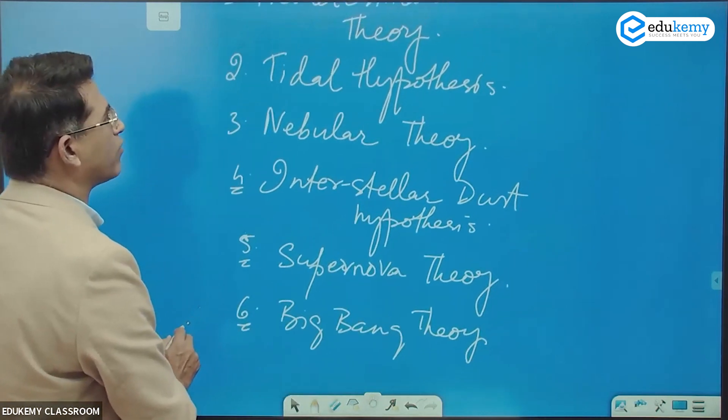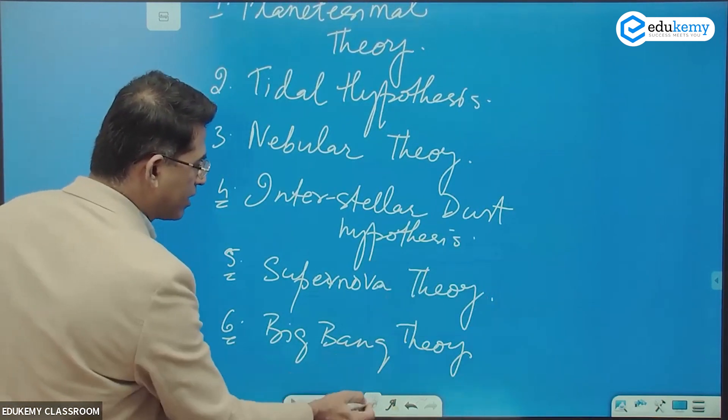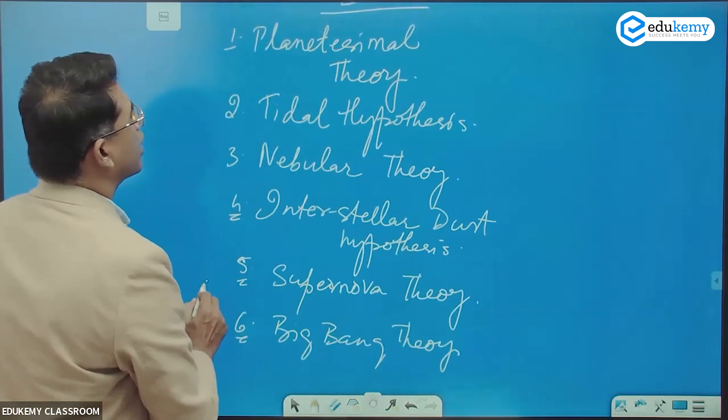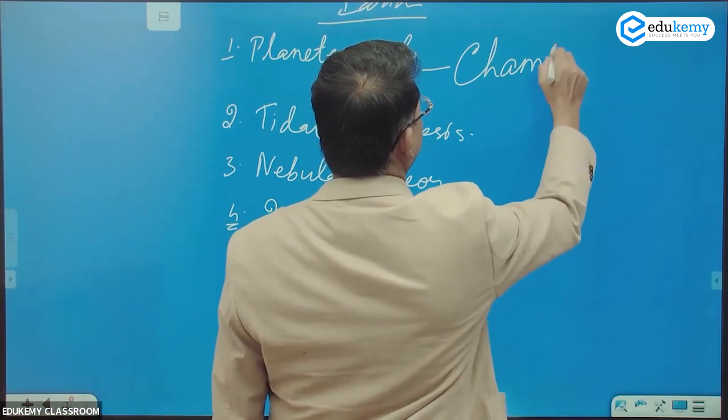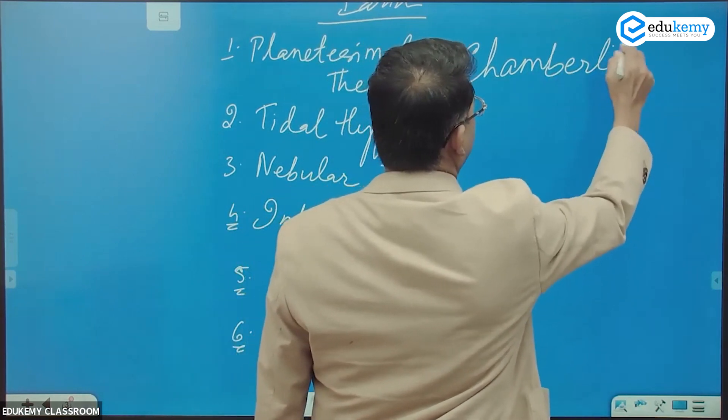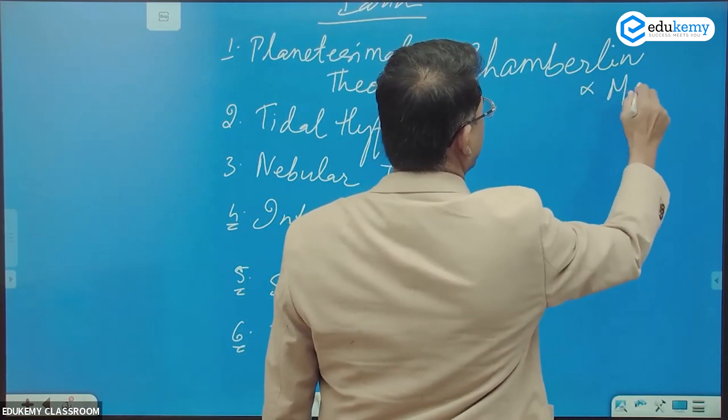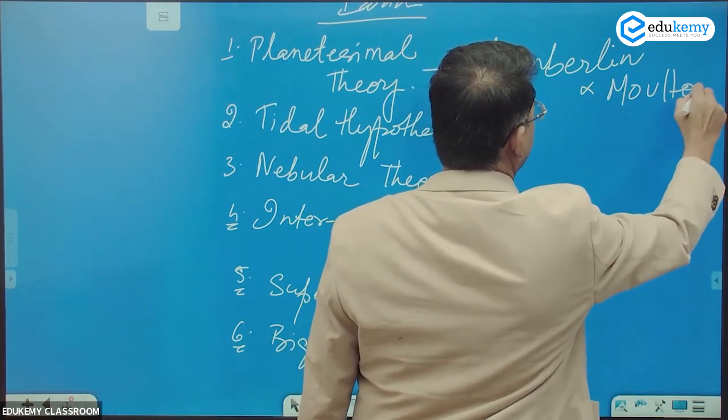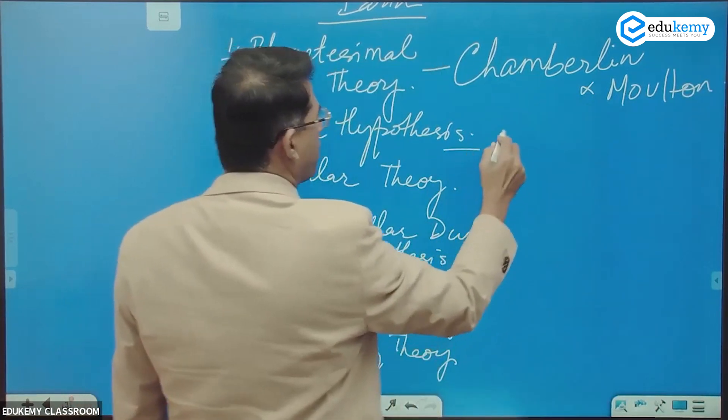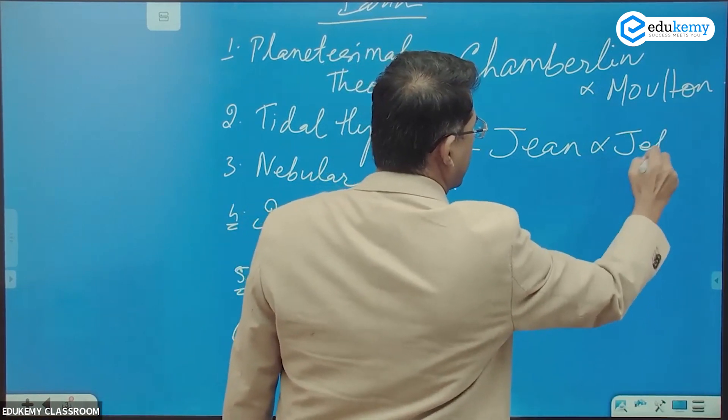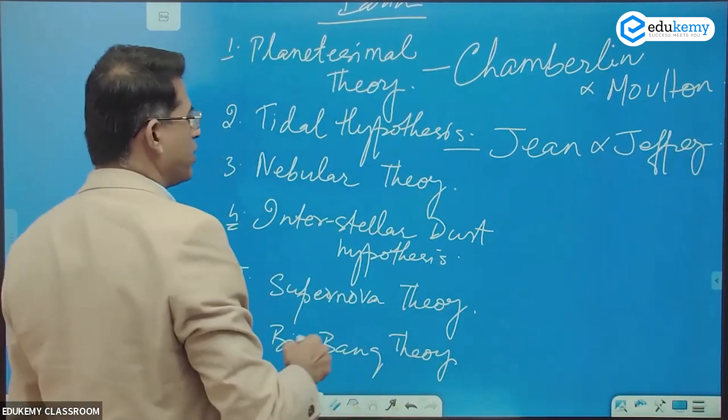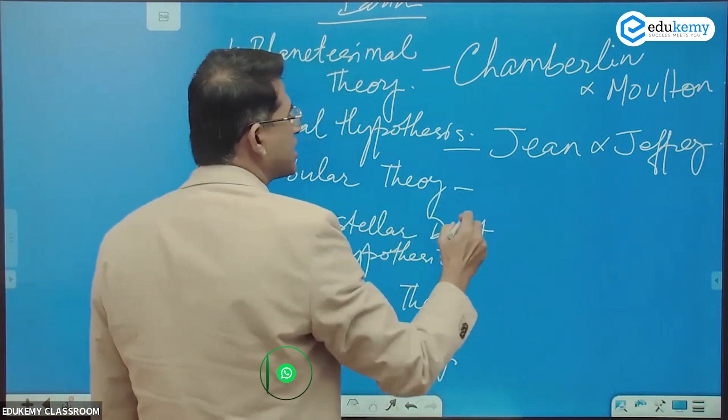These are the six origin theories, but we will not get into all of them. Remember these six names. Planetesimal theory was given by Chamberlain, modified by Moulton. Tidal Hypothesis by Jeans and Jeffreys.